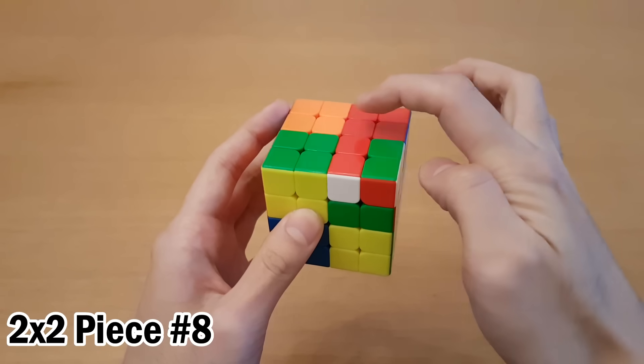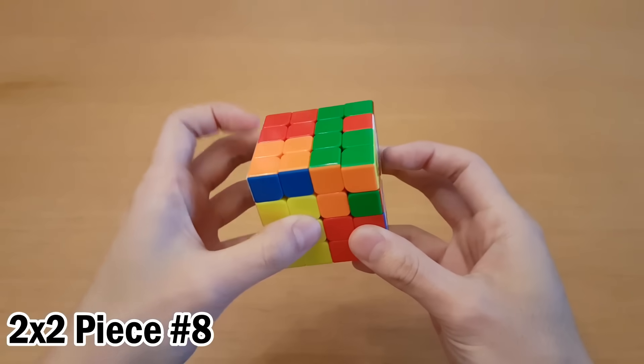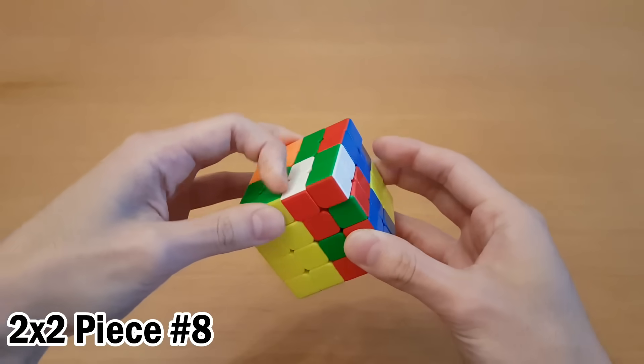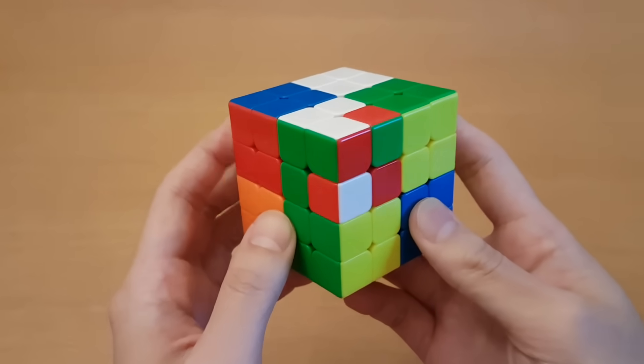So, this one to here to here. I can move this one up first like this. Move the other one in. Undo. Undo. Oh, no. These two edges need a swap.